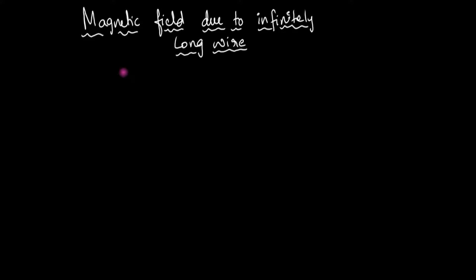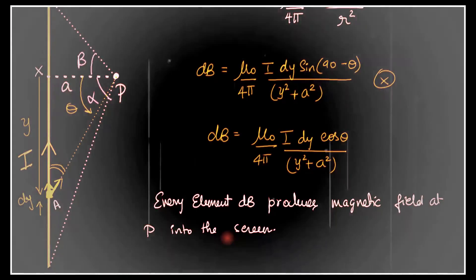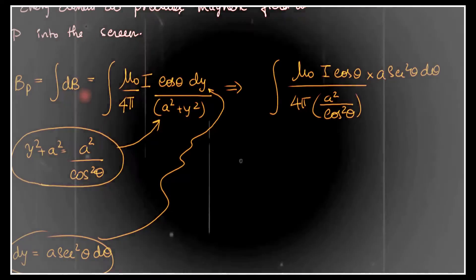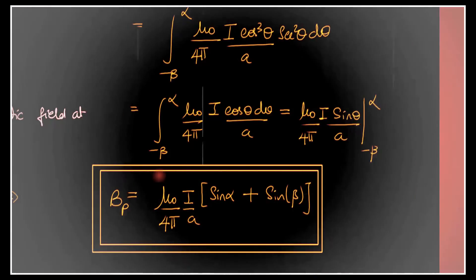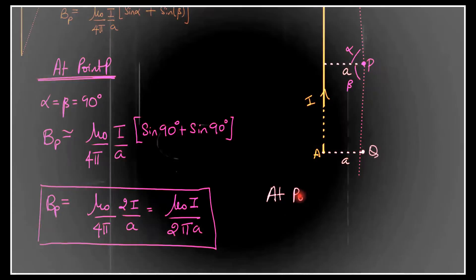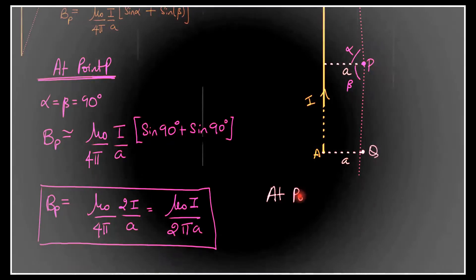In this video, I will teach you to calculate the magnetic field due to an infinitely long wire. Now if you have followed my videos, you would remember that we have actually solved this before. What we did first was we calculated the magnetic field due to a finite wire by using Biot-Savart's law, we did all the integrals, and then eventually we substituted alpha and beta equal to 90 degrees. When the wire becomes infinitely long, these angles tend to become 90 degrees, and eventually we found out the strength of the magnetic field.